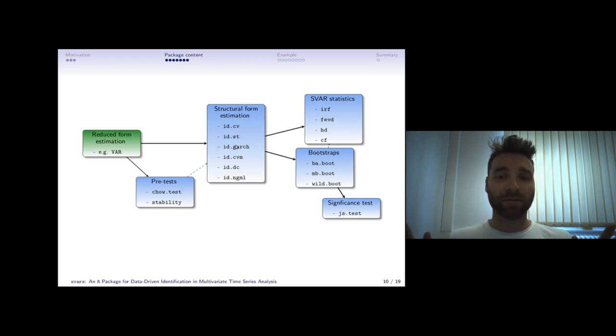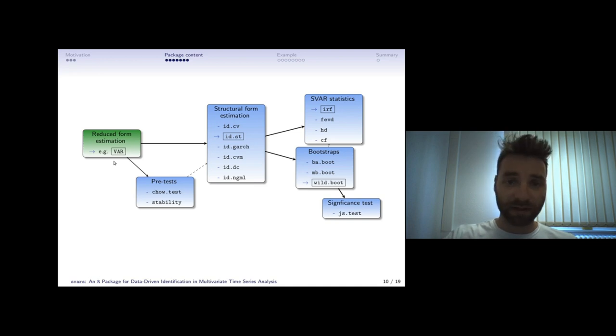There's also the possibility for pre-tests like Chow test, parameter stability, but this is optional so you can directly pass it to one of these functions. You do not have to do any further specification. It works directly out of the box. Then afterwards when you obtain your structural estimate you can pass it to one of the other functions, for instance to calculate impulse response functions or forecast error.